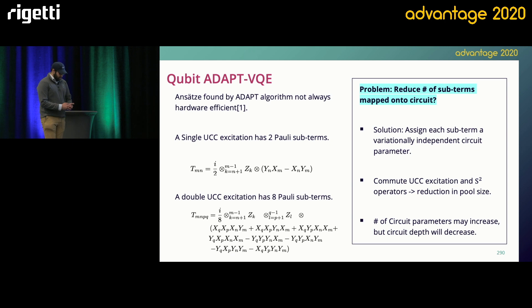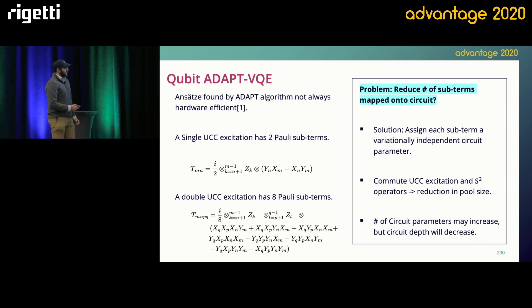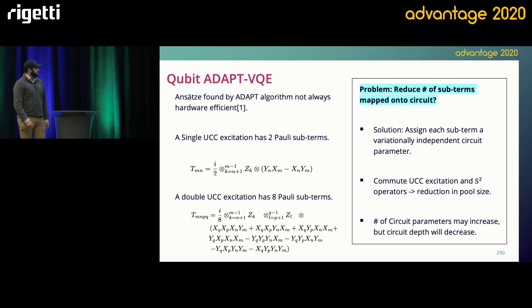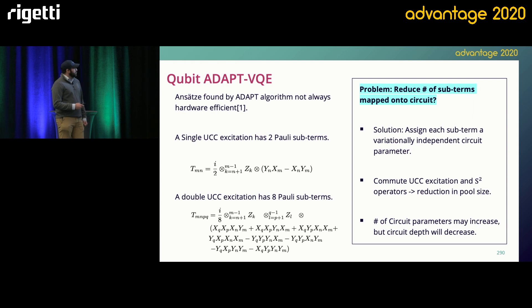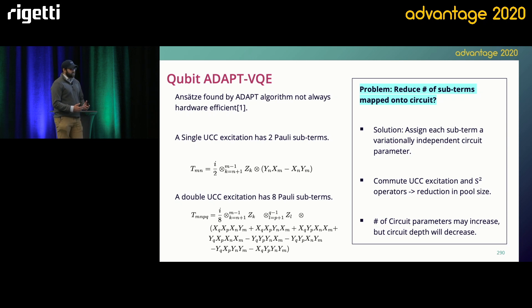One way to reduce this problem is to map just one Pauli exponential at a time. The issue is your operator pool becomes massive, because for each Pauli exponential you want an independent variational parameter — so if you have eight excitation operators, the pool would be eight times eight. One way to get past this is to see which operators in your pool commute with the S² (spin squared) operator. This is a way to spin-adapt your UCC operator pool. It reduces the pool size, and defining each excitation as just one Pauli exponential doesn't increase the pool size too much.